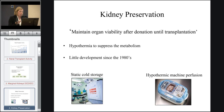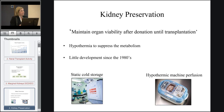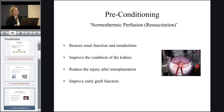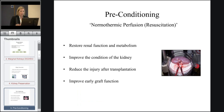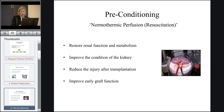The basic principle is that hypothermia causes injury over time. The longer an organ is stored under these conditions, the more injury it gets. It's thought that kidneys from marginal donors — the DCD and ECD kidneys — are particularly susceptible to this type of injury. The alternative is to use the preservation interval to actually improve or condition the kidney. We can do this by introducing a short period of normothermic perfusion — in effect, warming the kidney up before we transplant it. In doing so, we restore renal function and metabolism, improve its condition, reduce the injury, and thus improve the early graft function.